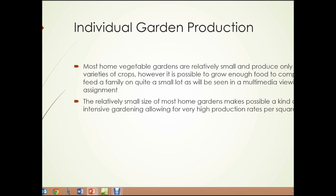Most home vegetable gardens are relatively small and produce only a few varieties of crops. However, it is possible to grow enough food to completely feed a family on quite a small lot, and you will see that in one of the multimedia viewing assignments for this unit. The relatively small size of most home gardens makes possible a kind of intensive gardening that allows for very high production rates per square foot. Individual gardens are often far more productive per square foot than large commercial farms.